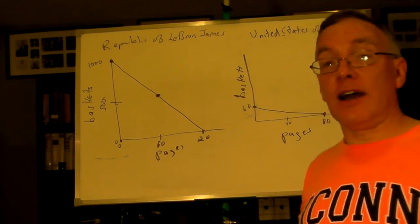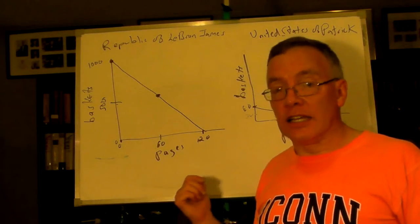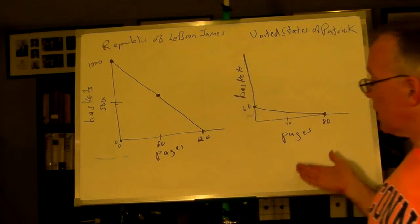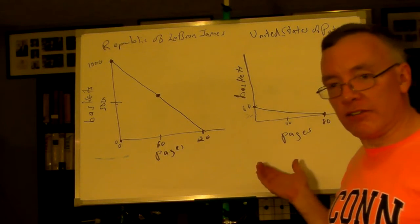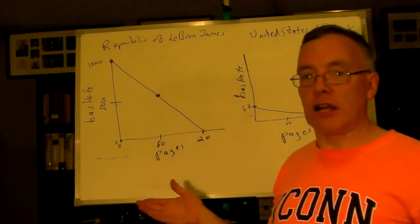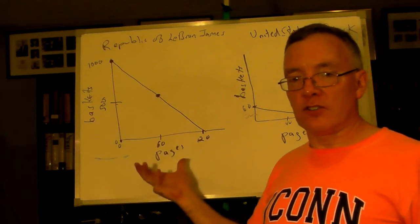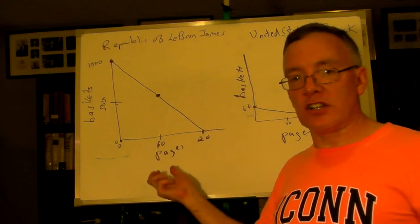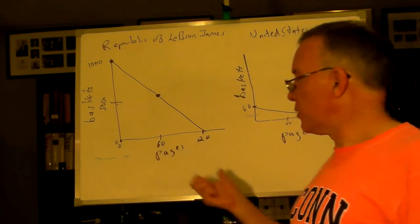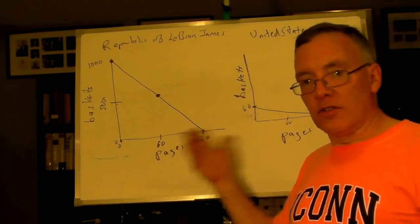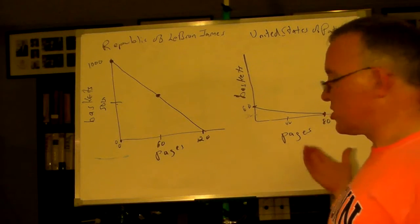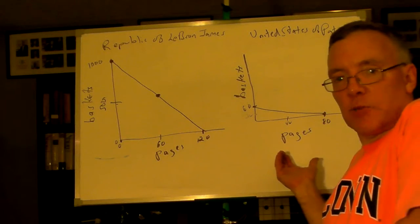This is where we are. Now, clearly Patrick could benefit from trade with LeBron James, a rich and powerful country that has a lot of production and a lot to offer. So, this idea of comparative advantage, how does Patrick have any comparative advantage?